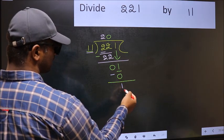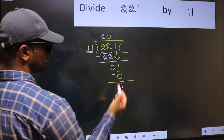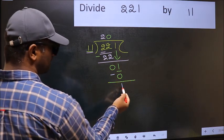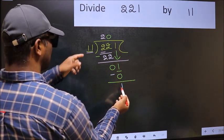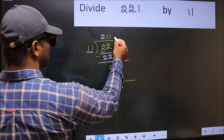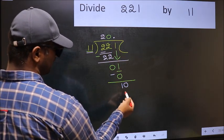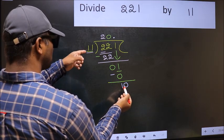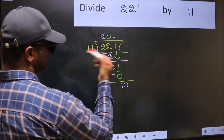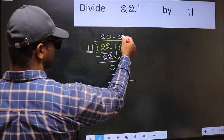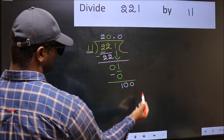Over here, we did not bring any number down. And 1 is smaller than 11. So, now you can put dot and take 0. So, 10. 10 is still smaller than 11. We already have the decimal. So, take 0. And here also 0.